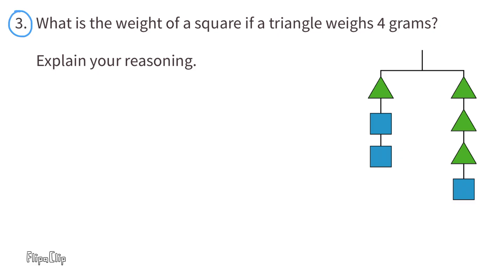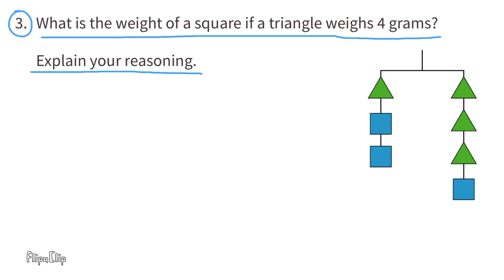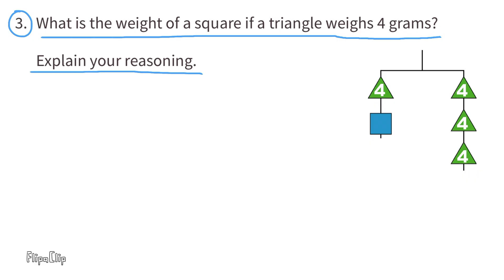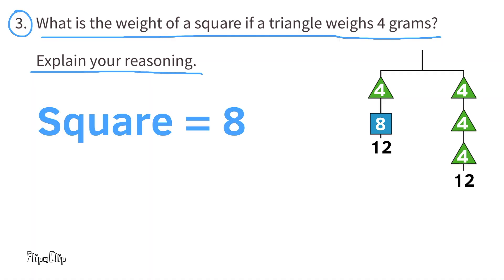Problem number 3. What is the weight of a square if a triangle weighs 4 grams? Each triangle weighs 4 grams, so we label each triangle with a 4. If I remove one square from each side of the hanger, it remains balanced. The right side of the hanger has a value of 12, and the left side reads 4 plus an unknown number equals 12. What number plus 4 equals 12? The square is worth 8.